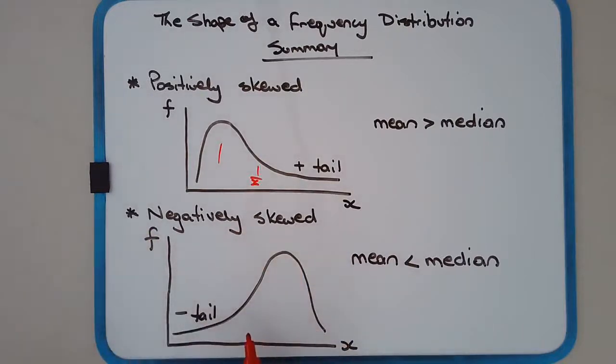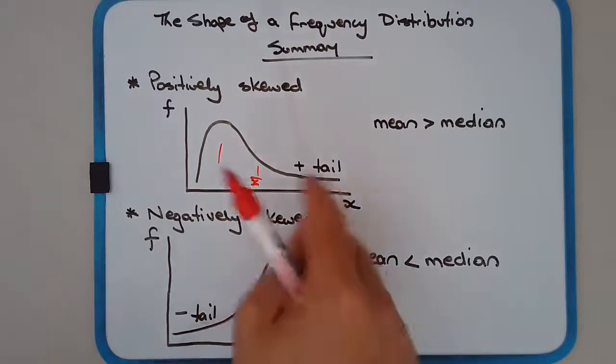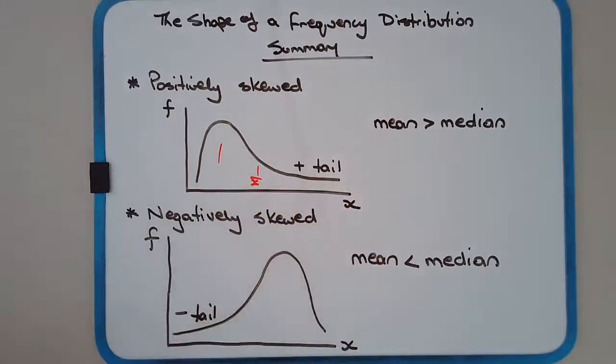An example of this would be, for example, maths exam scores. Most of the class did really well, so they'd have all their marks here. But there might be one or two or three students that did quite poorly, so they'd be down the bottom here. Both of these types of distributions invoke questions, and why are these tails there? And that's really the question we should be asking.